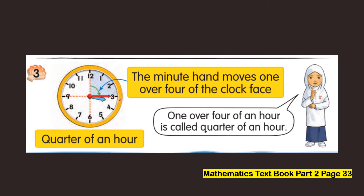Look at this clock face. The minute hand moves one over four of the clock face. It means the minute hand moves from twelve until it points to number three. This is what we call one over four of an hour, also called quarter of an hour. This shaded area is quarter of an hour.